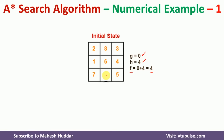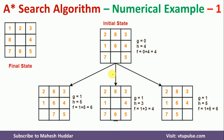There are 3 possible moves from the initial state: we can move 6 from top to bottom, 7 from left to right, and 5 from right to left. We don't know which is best, so we compute the function value for all 3. The first case is 7 moved from left to right, the second is 6 moved from top to bottom, and the third is 5 moved from right to left.